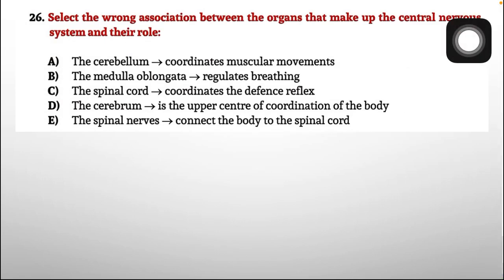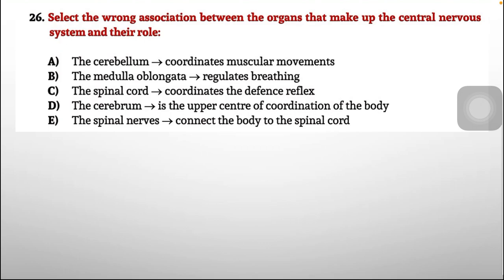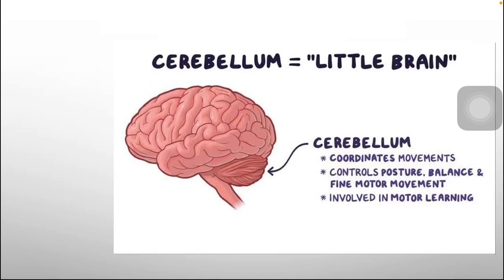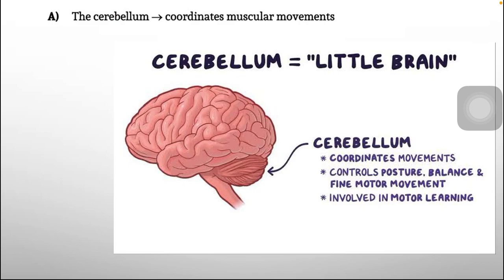Question 26: Select the wrong association between organs of the central nervous system and their role. Options include: A) cerebellum coordinates muscular movements; B) medulla oblongata regulates breathing; C) spinal cord coordinates defense reflex; D) cerebrum is the upper center of coordination; E) spinal nerves connect the body to the spinal cord. The cerebellum coordinates movements, controls posture, balance, and fine motor movement — so option A is correct.